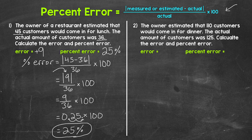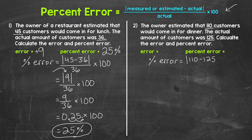The percent error is 25%. Let's move on to number two, where the owner now estimates for the dinner crowd. The owner estimated that 110 customers would come in for dinner. The actual amount of customers was 125. Calculate the error and percent error. We have percent error equals the absolute value of the estimated value — 110 — minus the actual value — 125 — divided by the actual value, 125, times 100.